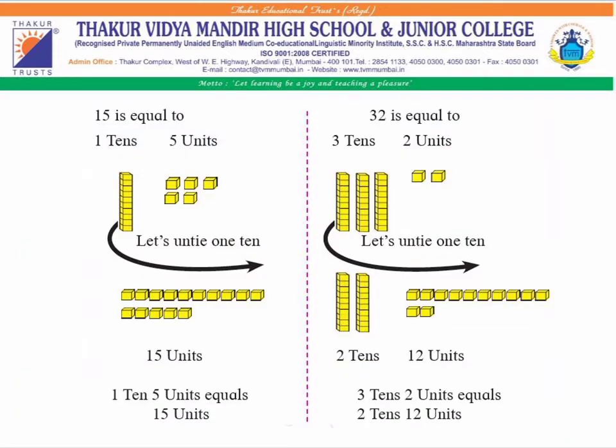Children, 15 is equal to one tan and five units — you can see here in the picture. Let's untie one tan. We will get 15 units. That is, one tan and five units is equal to 15 units.